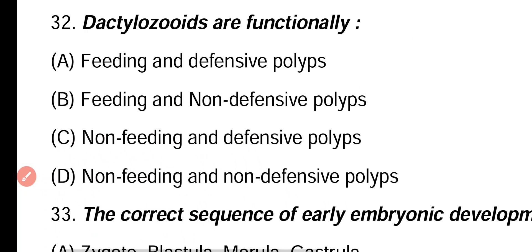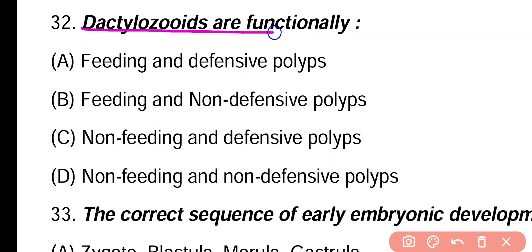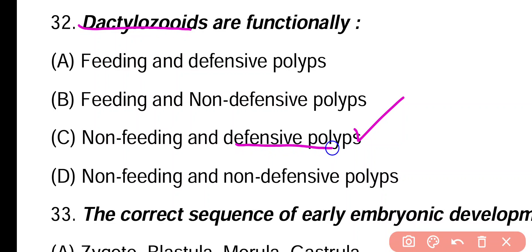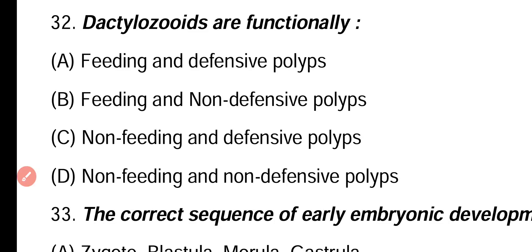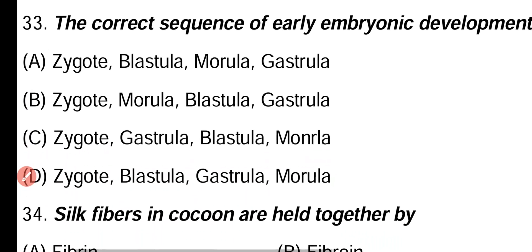Question 32. Dactylozooids are functionally: feeding and defensive polyp, feeding and non-defensive polyp, non-feeding and defensive polyp, non-feeding and non-defensive polyp. Correct answer is option C. Dactylozooids are non-feeding and defensive polyps.